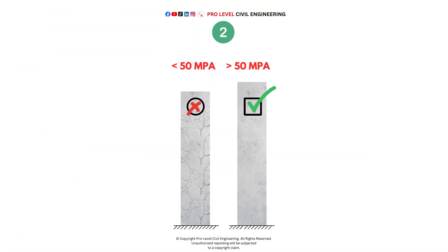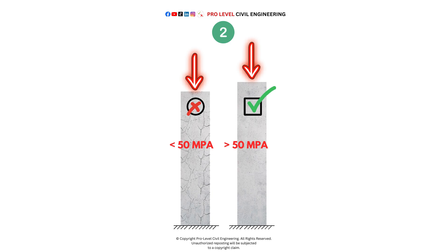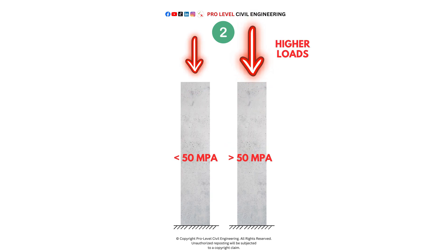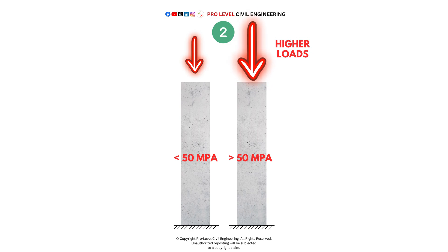2. Using higher-strength concrete — higher-strength concretes generally experience less creep than lower-strength concretes when subjected to the same level of stress. This means that if both a high-strength and a low-strength concrete are loaded with the same amount of stress, the high-strength concrete will deform less over time. However, in practice, the applied stresses on higher-strength concretes tend to be higher than those on lower-strength concretes, because higher-strength concrete is designed to carry larger loads.